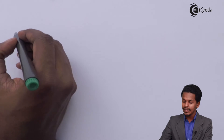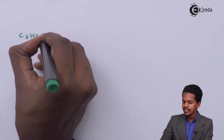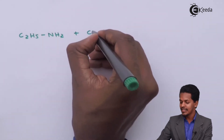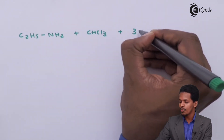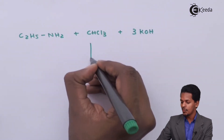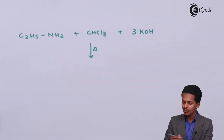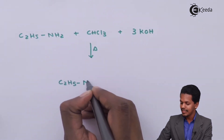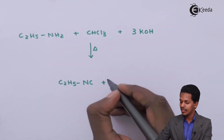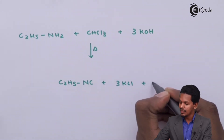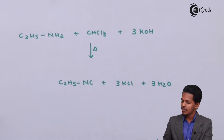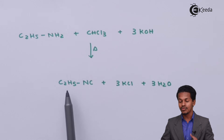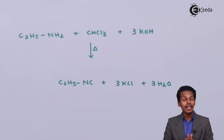Suppose we consider ethylamine, C₂H₅NH₂, and react it with chloroform (CHCl₃) in the presence of KOH (potassium hydroxide). After heating, the main product obtained is C₂H₅NC, along with byproducts of 3 moles of KCl and 3 moles of H₂O. This main product is known as ethyl isocyanide.